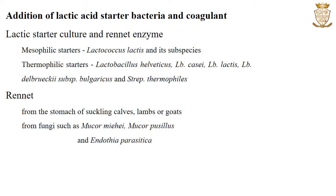The next step is the addition of lactic acid starter bacteria and coagulant rennet enzyme. During this step, the milk proteins are coagulated to form a solid curd. The curd formed during coagulation contains fat globules, water-soluble material and water along with the coagulated casein protein. The whey, the liquid portion, contains proteins like lactalbumin, globulin and riboflavin. Coagulation of milk is achieved using lactic acid starter culture and rennet enzyme.